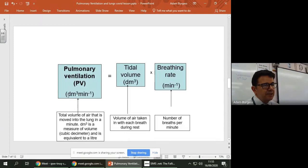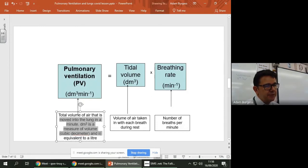Now, notice that they're using different units. Volume can be centimeters cubed, but because we're talking about large amounts, large volumes of air, it's called decimeters cubed. So as it says here, total volume of air that is moved into the lungs in a minute. DM cubed is a measure of volume and is equivalent to a liter. Okay, so it's because the large amount of air going through per minute.